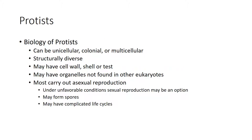Protists can be unicellular, colonial, or multicellular — they can be in clumps, very close together. They can be structurally diverse, and the Protista kingdom typically has lots of variety and diversity. They may have a cell wall or a shell or a specific sort of shell called a test, which we'll talk about later. They may have organelles not found in other eukaryotes. A lot of them carry out asexual reproduction and may be able to sexually reproduce at times. A lot of them will form spores and may have very complicated, strange life cycles.